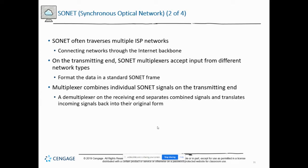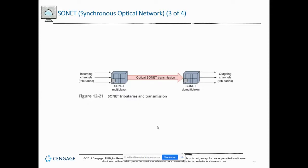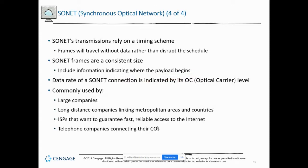A multiplexer combines signals and a demultiplexer uncombines them. Incoming channels go into the multiplexer, travel over the SONET network, reach the destination, and the demultiplexer separates out the channels. SONET's big deal is it relies on timing — it will ship empty frames if there's no data because it needs to meet its timing schedule. It sends without data rather than disrupt the schedule, so you know exactly when to expect it and how much.